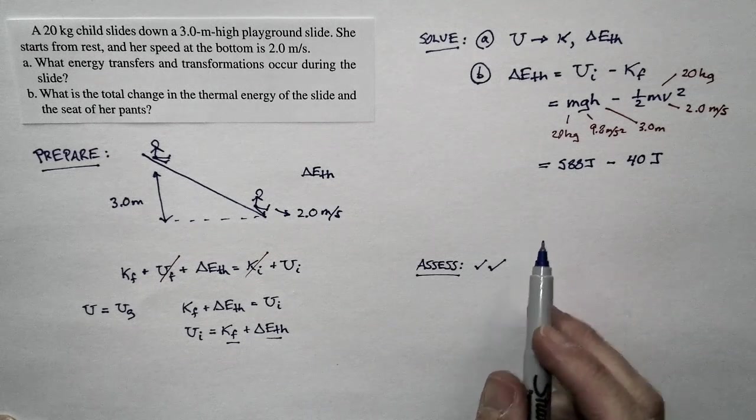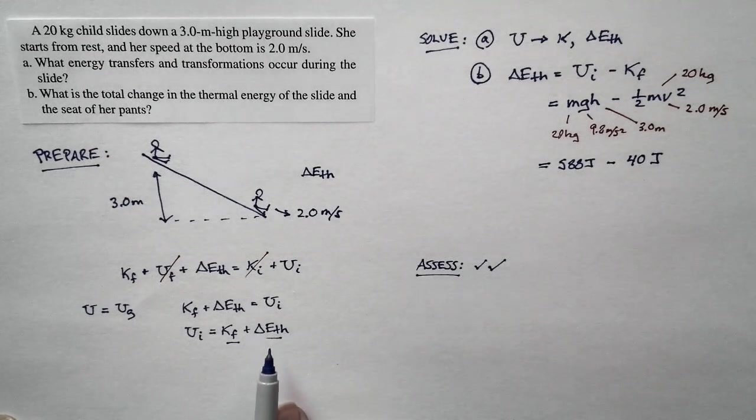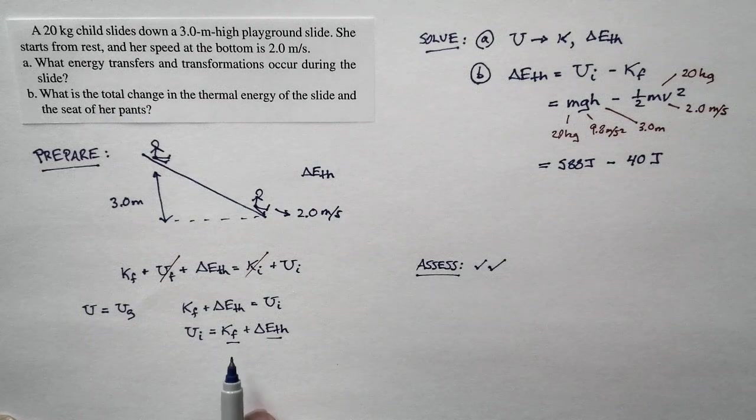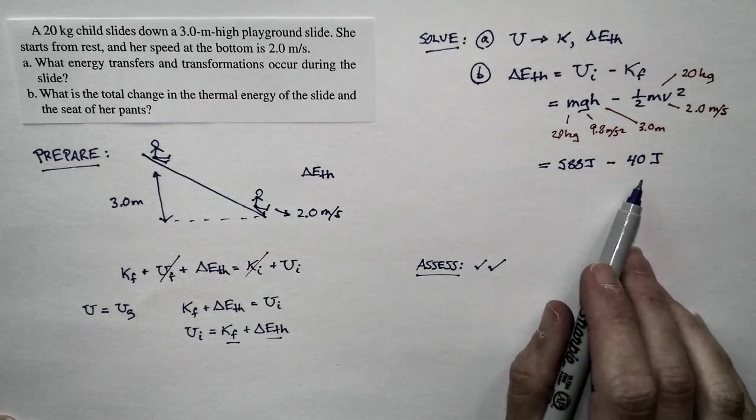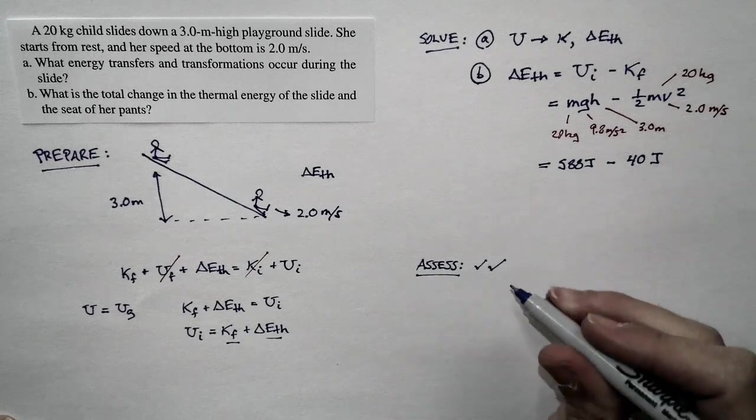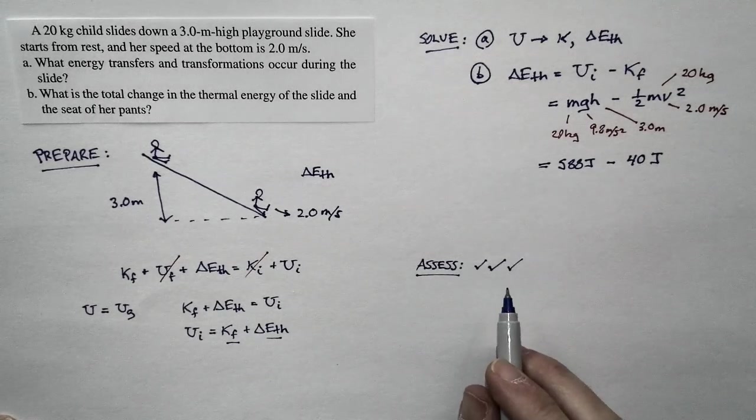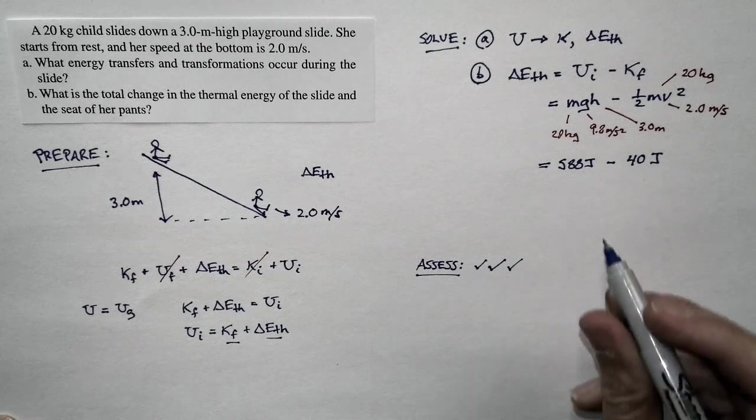Here's a quick assessment. We said that most of the energy goes to thermal energy and the kinetic energy is a small component. And in fact, that's what we find here. The kinetic energy that she has is very small compared to the thermal energy. So again, that's another check mark in our assessment box. Our problem is making sense.